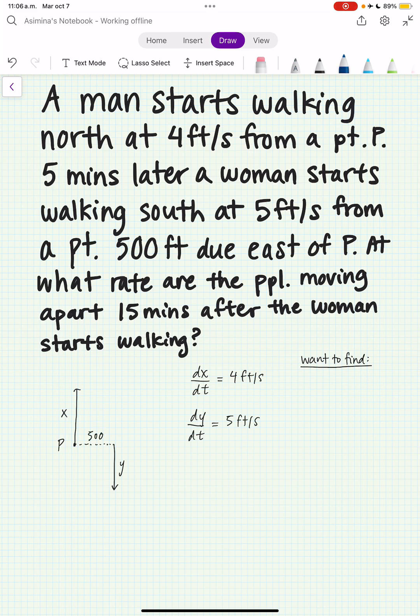Now we have the following right triangle. We have x plus y, and then the base is 500, and then we have this hypotenuse, this diagonal, which we can call z.